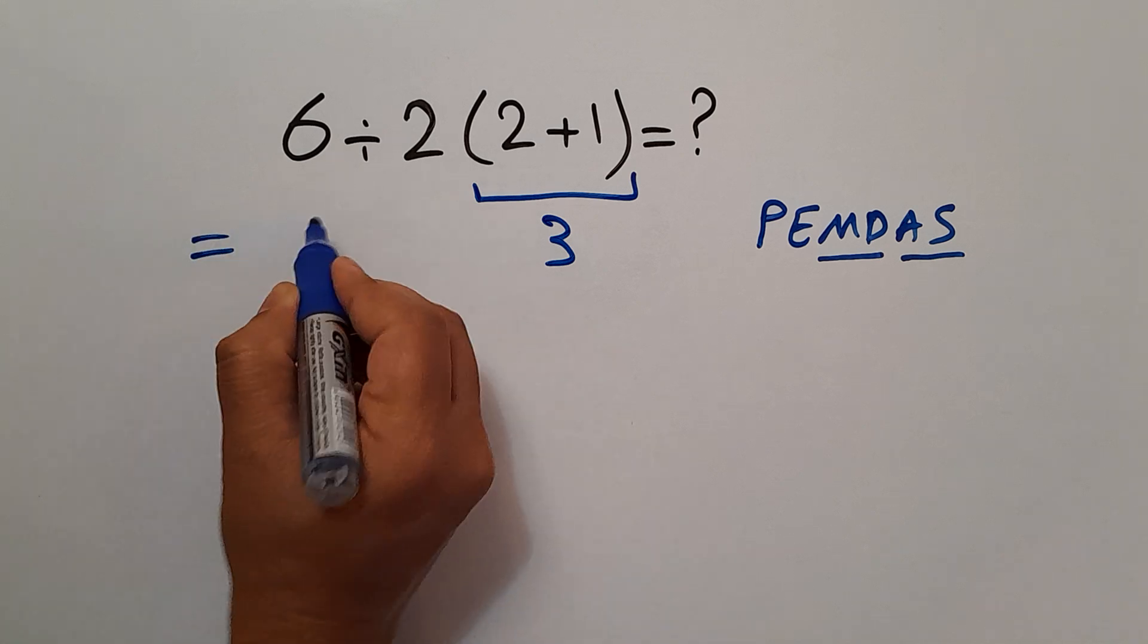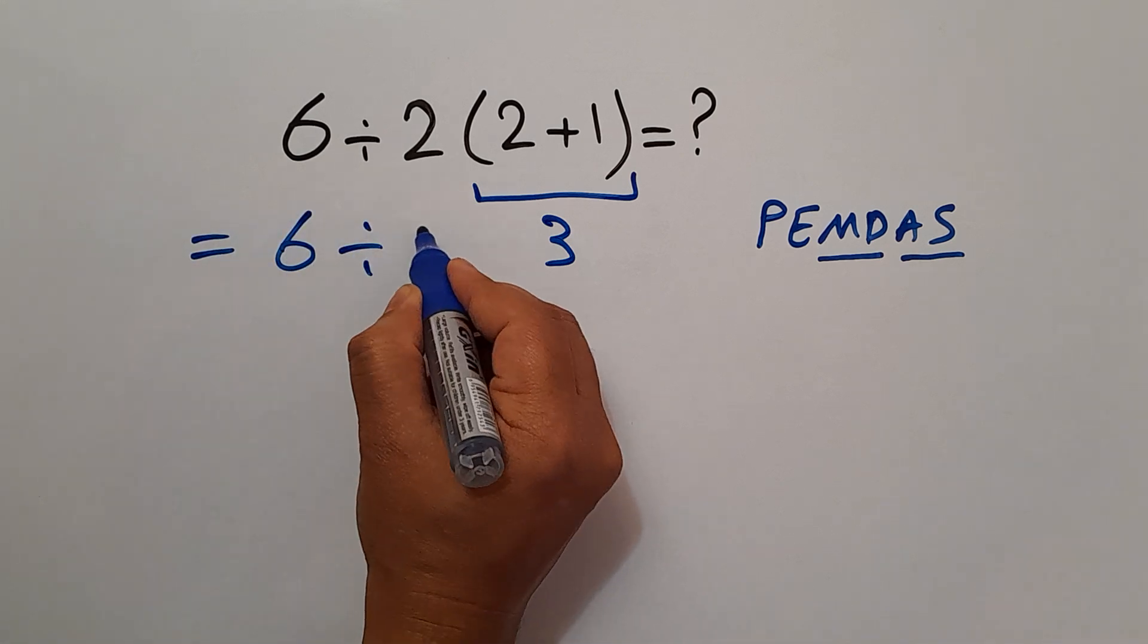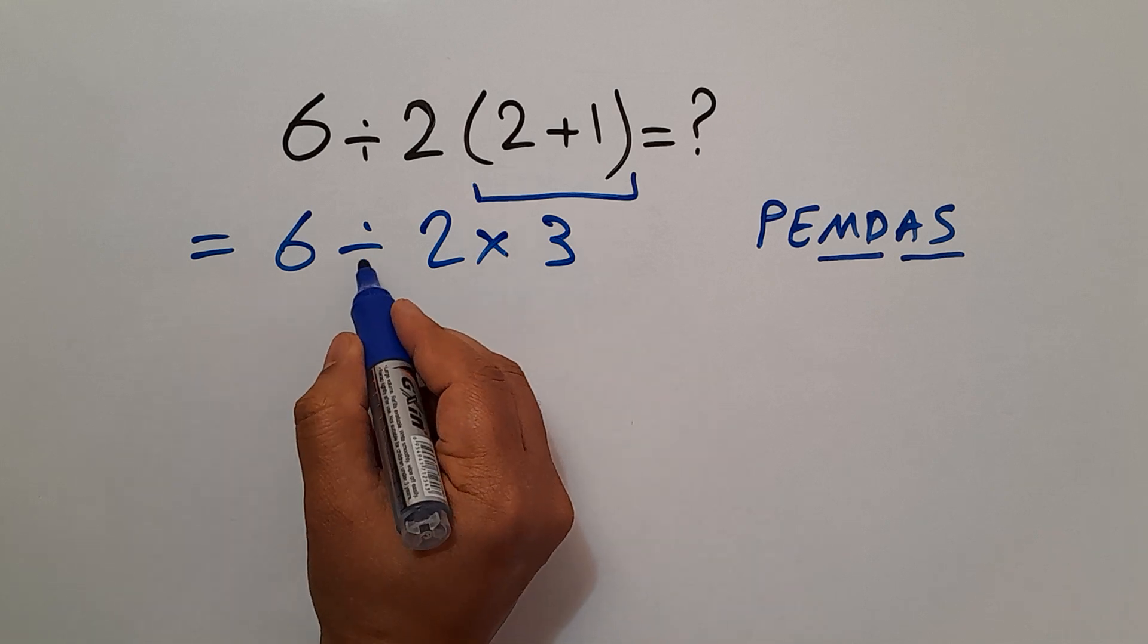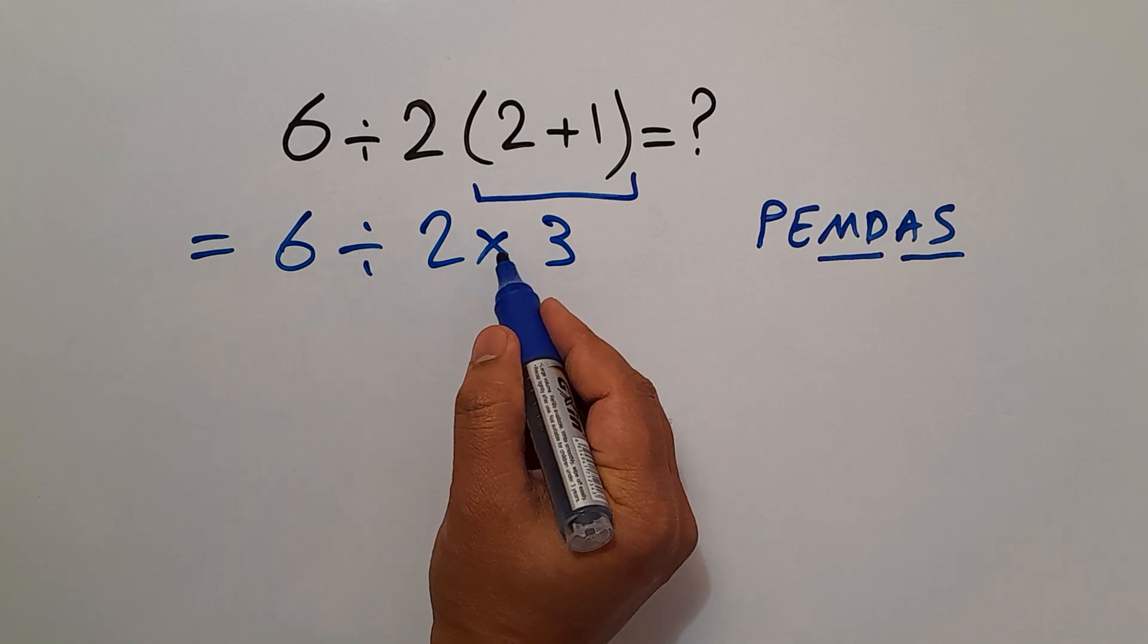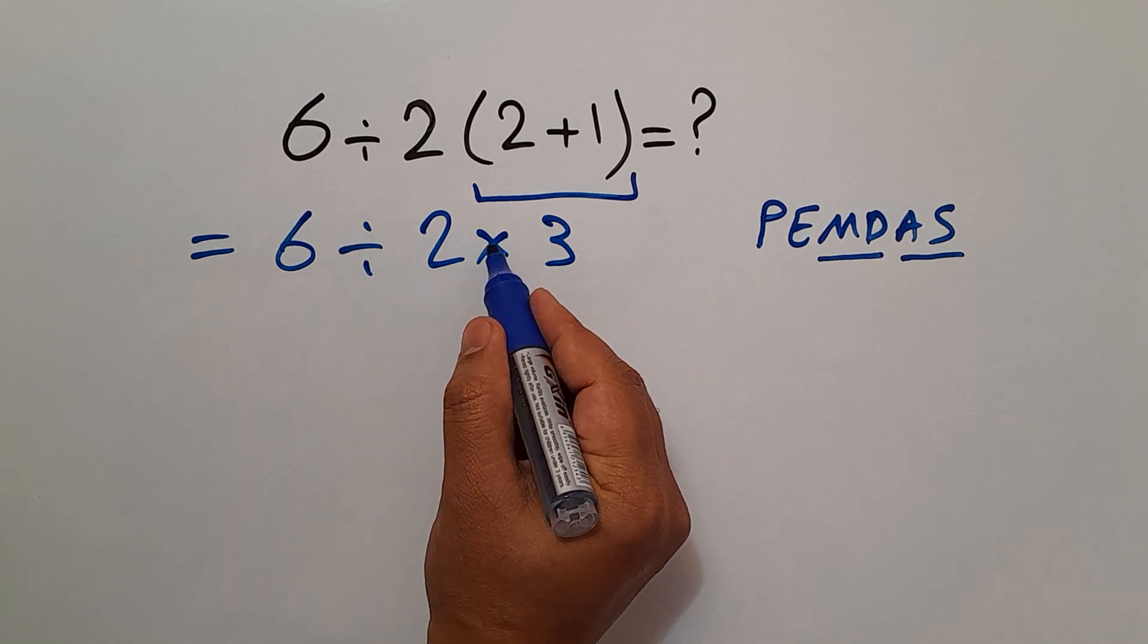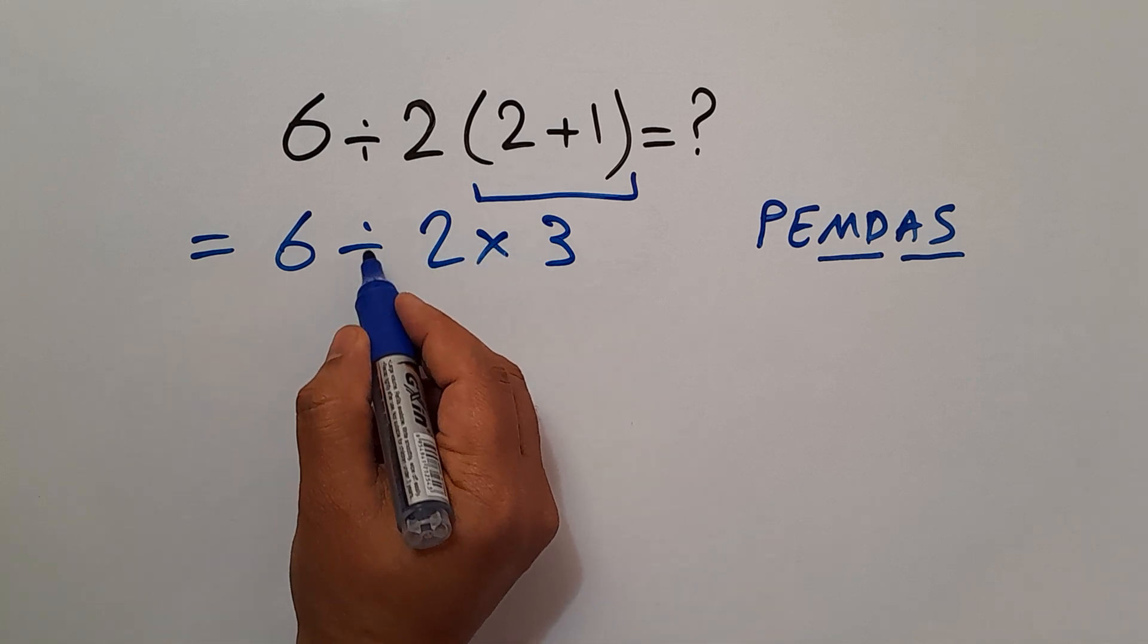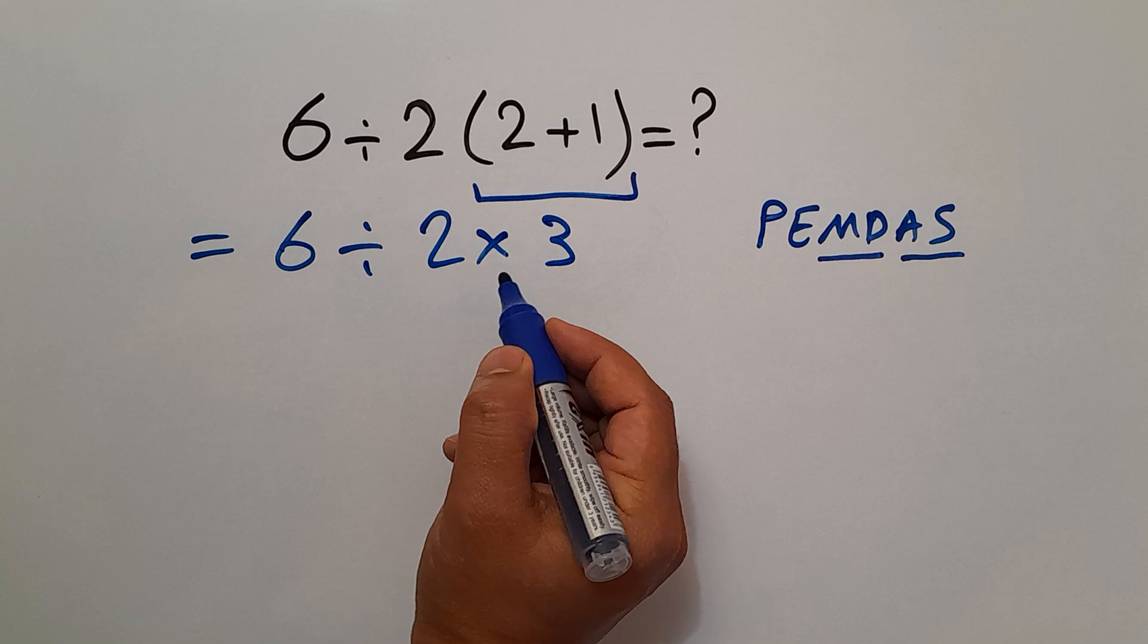So, we have 6 divided by 2 and times 3. Now, we have one division and one multiplication. Division and multiplication have equal priority, and we have to work from left to right. So, first, this division and then multiplication.